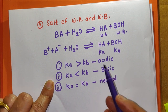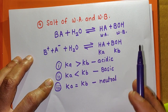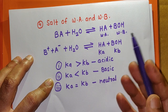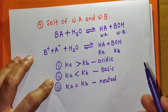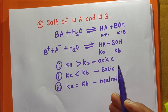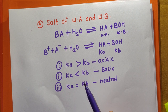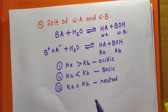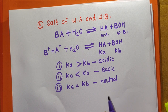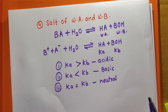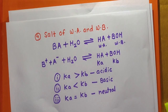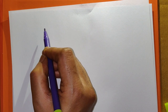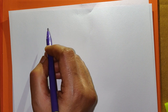For the salt of weak acid and weak base, you cannot directly determine whether the solution is acidic, basic, or neutral — it depends on the values of Ka and Kb. If Ka < Kb, the solution is basic; if Ka = Kb, the solution is neutral. We shall now see examples. The first example is NH₄F.